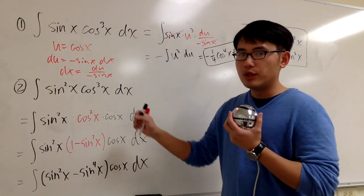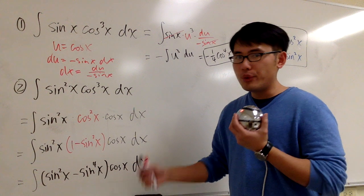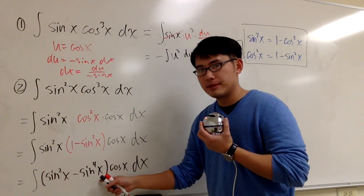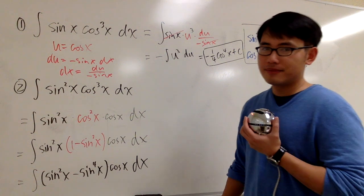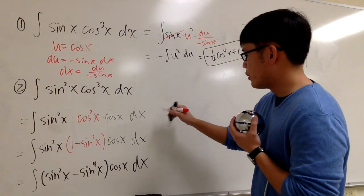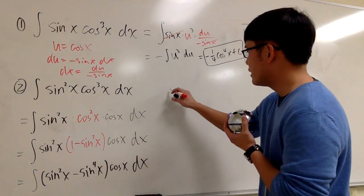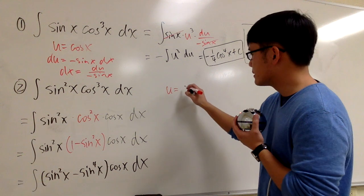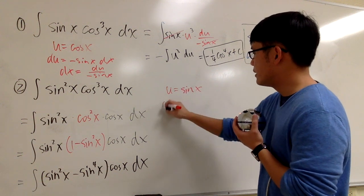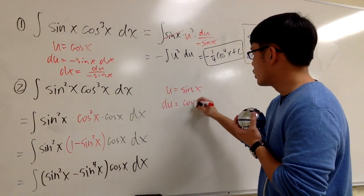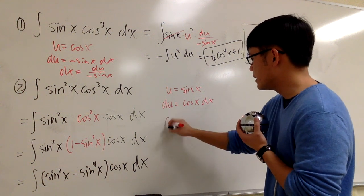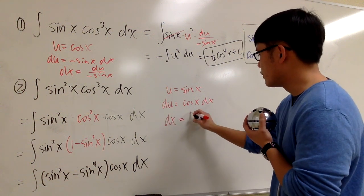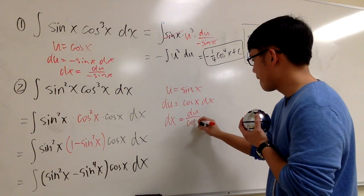And then that will be able to cancel with this part, the cosine. Let's do it. So right here, I'm going to say u is equal to sine x. And then du will be cosine x dx. And of course, we can isolate the dx. We get dx equals du over cosine.